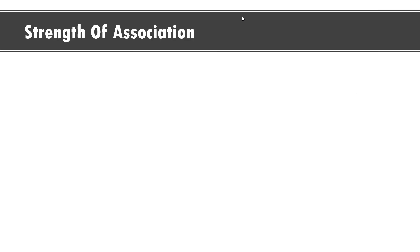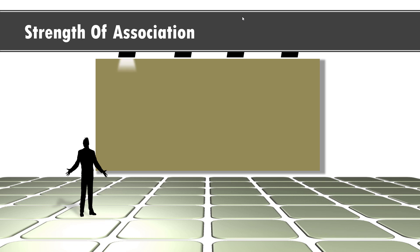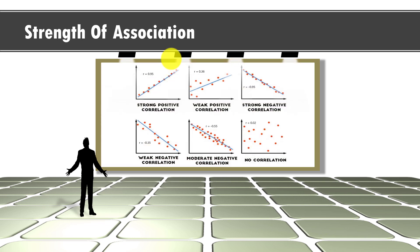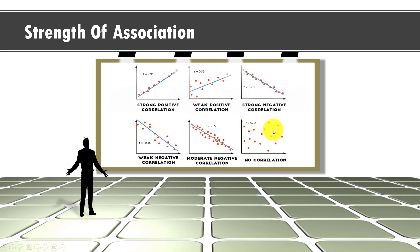Let us see some scatter plots between two numerical variables that will give you an idea of how strongly those variables are associated with each other. The first scatter plot shows both variables are highly correlated in a positive direction. Another scatter plot shows they are highly correlated but the direction is downward. And another scatter plot tells you they are not at all related, with the R value being 0.02, which is very close to 0.